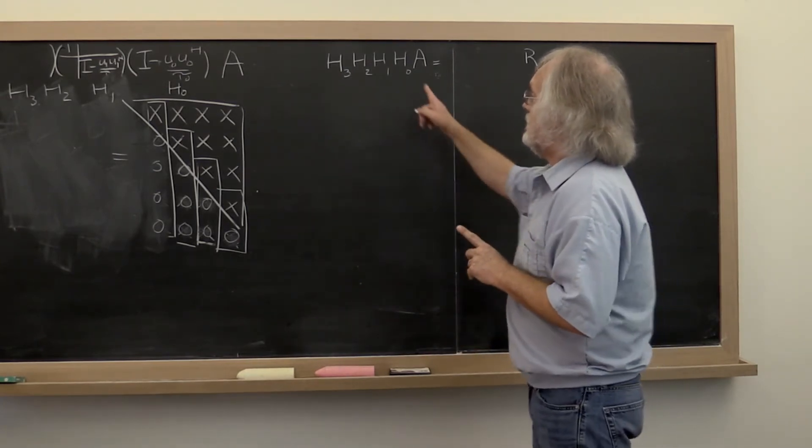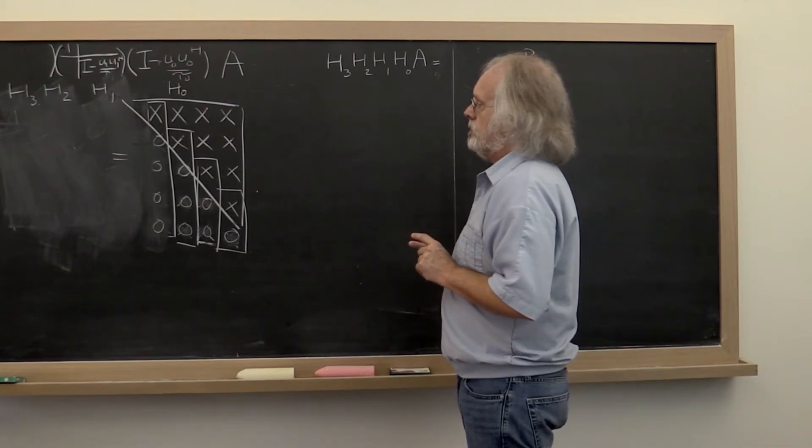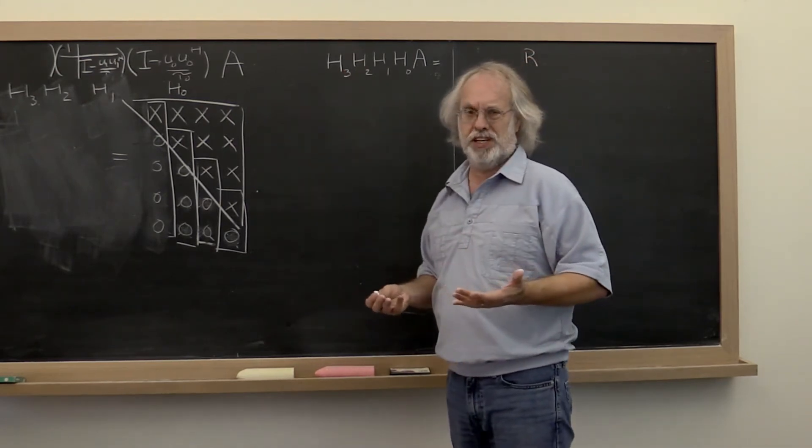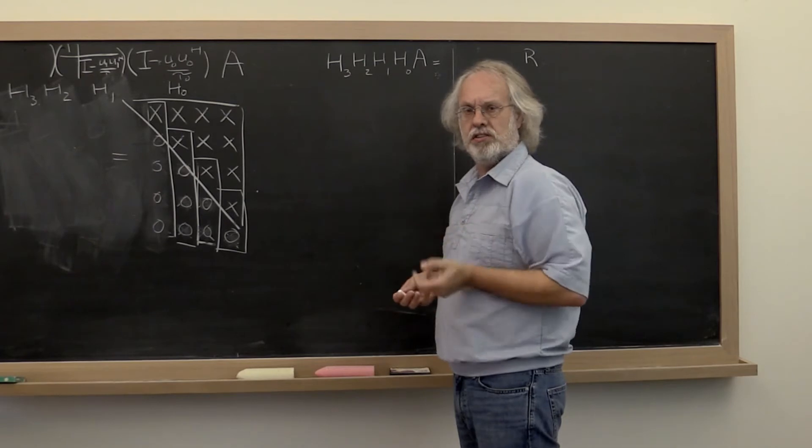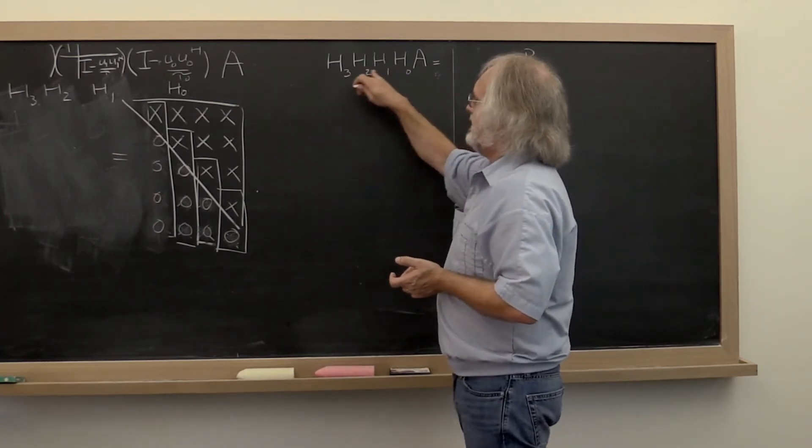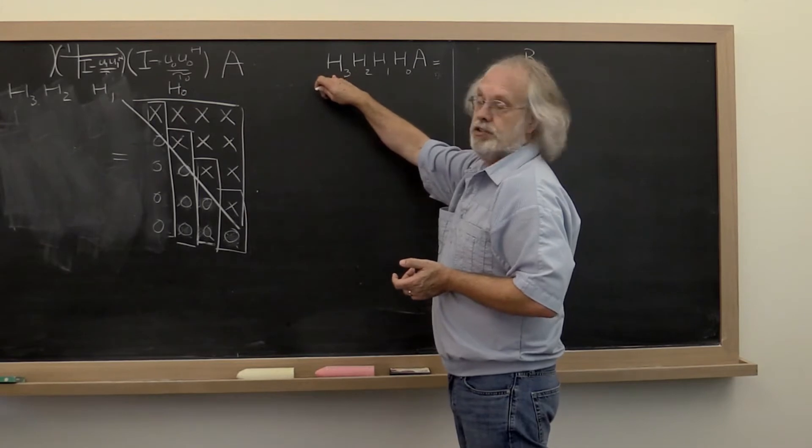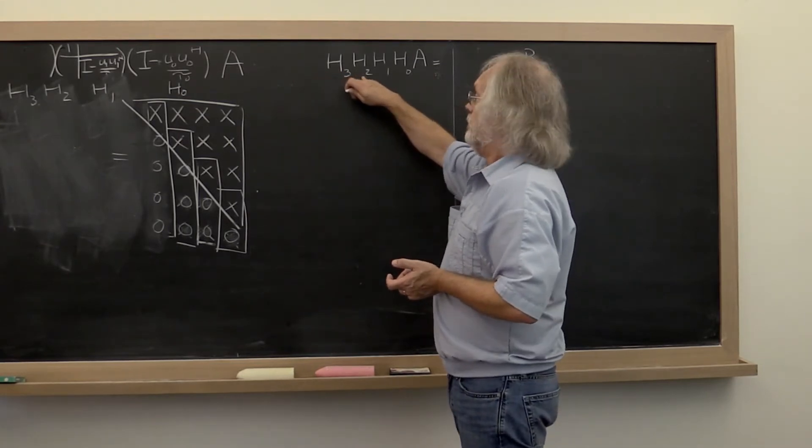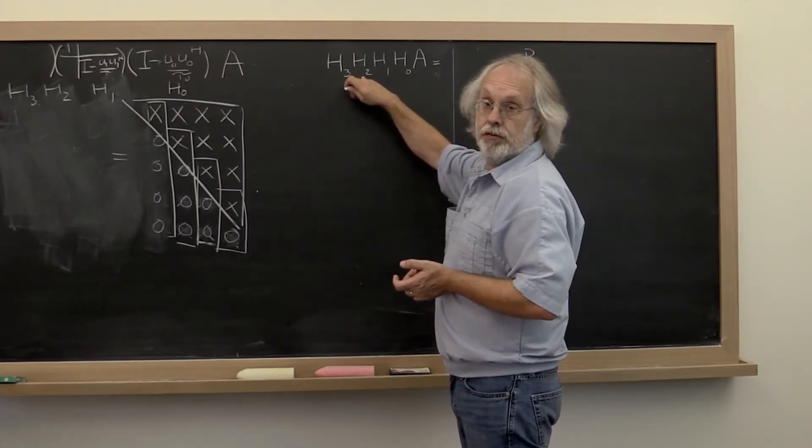Remember that these are all householder transforms. They're sort of kind of householder transformations because they may have these extra ones in the top left corner. But the fact is that the inverse of H3 is H3 itself. The inverse of H2 is H2 itself and so forth.